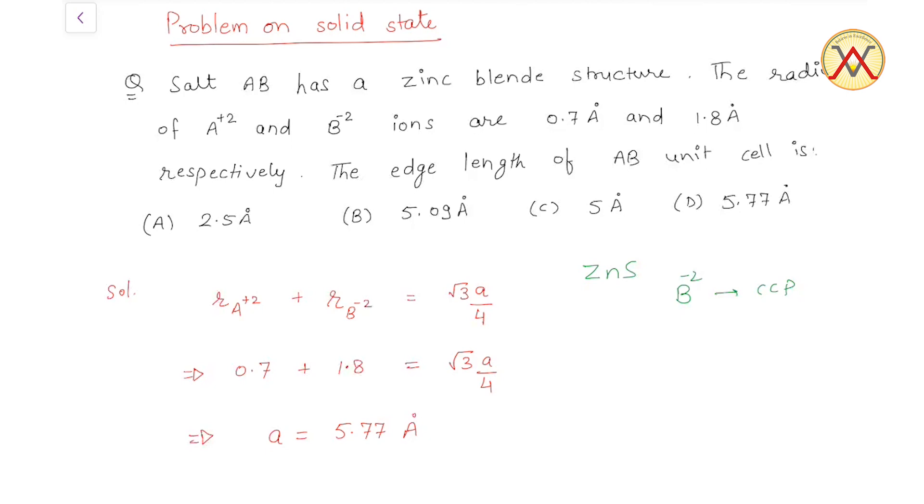Now in CCP, the number of tetrahedral voids is 8, and in alternate voids, positive ions are placed. That means A²⁺ will occupy 4 alternate tetrahedral voids.